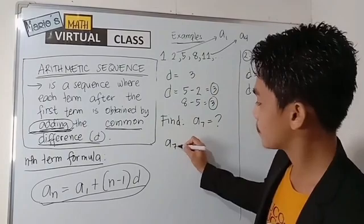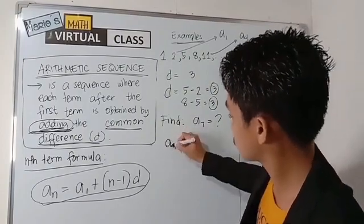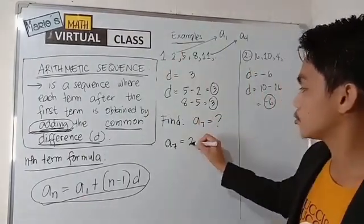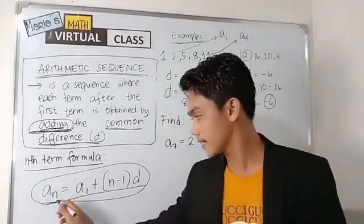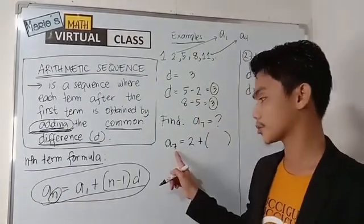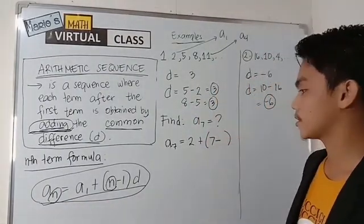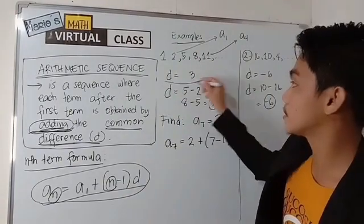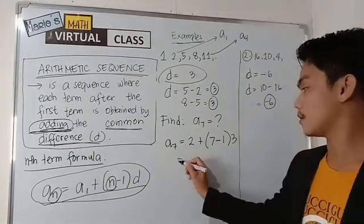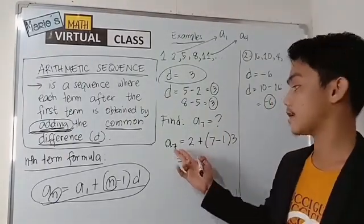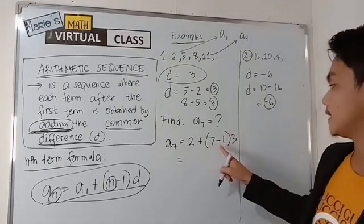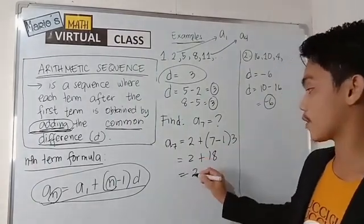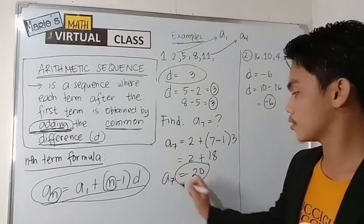By solving the seventh term, it would be a sub 7 is equal to your first term. So, in this sequence, your first term is 2 plus. So, your n, the nth term that you are solving is the seventh term. So, therefore, this n will be 7 minus, this is a constant number, minus 1, and then times the common difference. The common difference is the 3. So, simplifying this would be the value of the seventh term. So, 7 subtracted by 1 is 6 times 3 is equal to 18, added to 2 is equal to 20. Therefore, the seventh term would be 20.